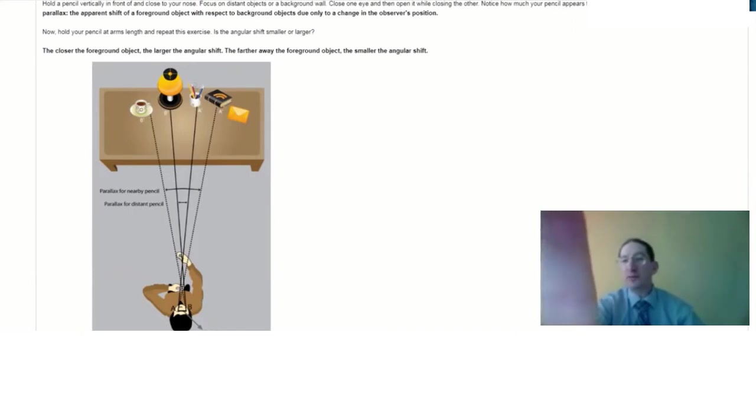Now move your finger far from your face and repeat the experiment. Close one eye, notice where your finger lands on the background wall, shift to the other eye, and notice it's a much smaller angular shift. And with that smaller angular shift, you'll calculate a greater distance.